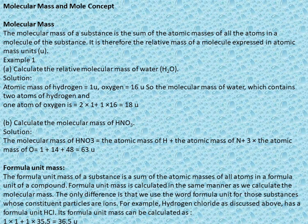The molecular mass of HNO₃ = atomic mass of H + atomic mass of N + 3 × atomic mass of O. There are 3 atoms of oxygen in HNO₃. Solution: 1 + 14 + 3 × 16 = 1 + 14 + 48 = 63u. The molecular mass of HNO₃ is 63u.